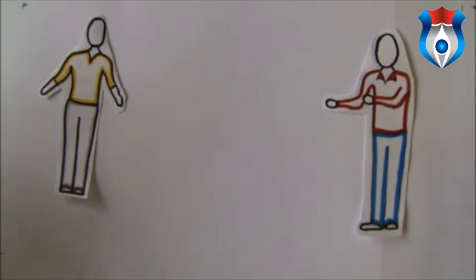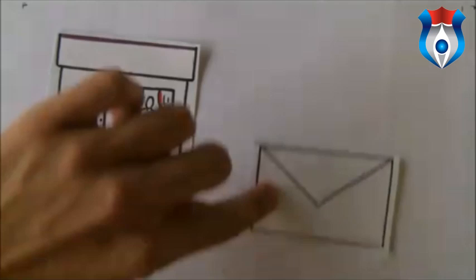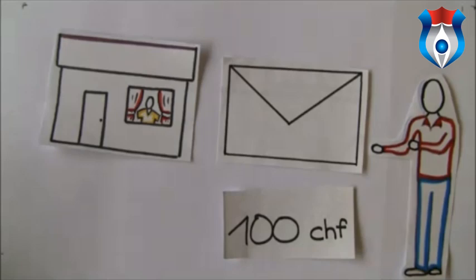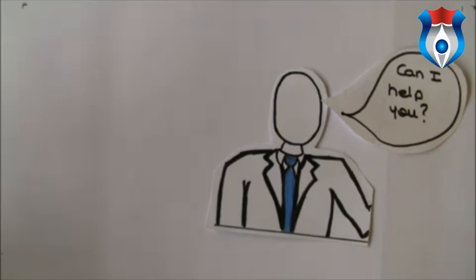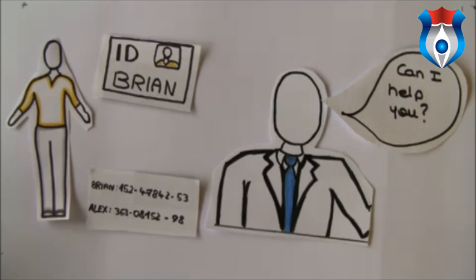Let's look at how Brian would have to pay back Alex in the traditional way. Brian is sitting in the kitchen reading the mail. He receives a letter from Alex explaining that he needs to pay him back the hundred francs lent last month. Brian gets in his car and drives to the nearest bank. At the bank he speaks to the banker, proves his identity, gives his account number and Alex's account number. The banker verifies the information and does the transfer. The whole process lasts 30 minutes.